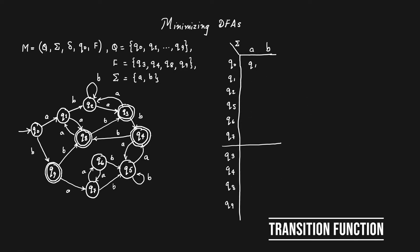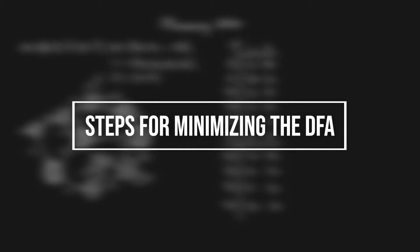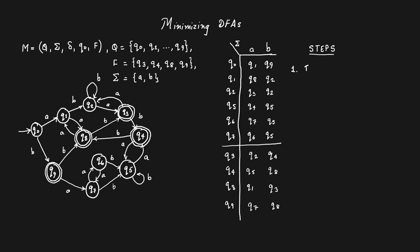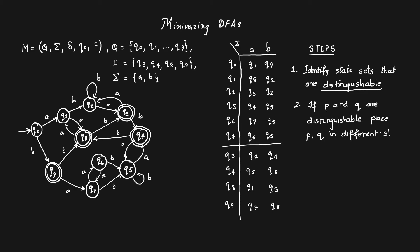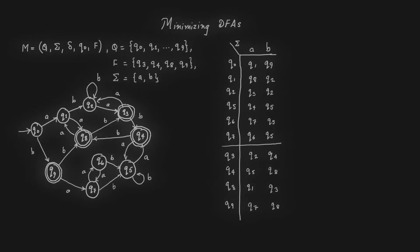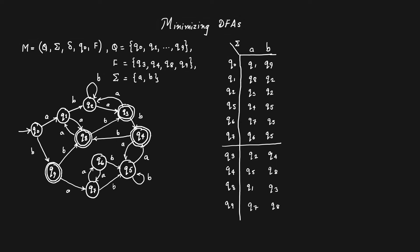We now fill up the transition function table. The steps for minimizing the DFA broadly involve manipulating the transition table. In step one, we identify sets of states that are distinguishable: if states p and q are distinguishable, we place them in separate partitions. There is a natural partition between non-final and final states. Before proceeding, we mark the final states in the transition table. The base case is distinguishing sets of states on the empty string, which is done by separating final and non-final states.